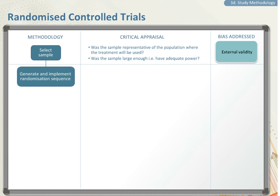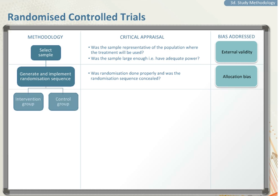The next step is generating and implementing the randomization sequence. Ask yourself: was randomization done properly, and was the randomization sequence concealed? The bias minimized here is allocation bias. You then identify two groups — one exposed to the intervention, the other to a placebo or comparator drug. Ask yourself: were the two groups similar at baseline with respect to important confounders? In other words, was randomization successful? This minimizes confounding bias.